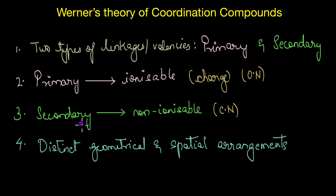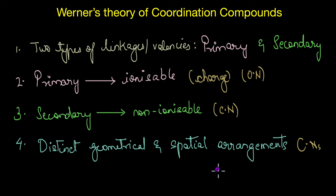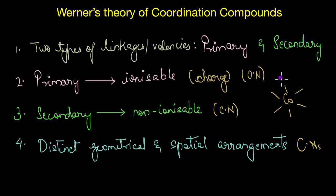The coordination number here is six, corresponding to six ammonia ligands. The third postulate states that groups bound to the central metal atom through secondary linkages have a distinct geometrical and spatial arrangement corresponding to different coordination numbers — these spatial arrangements are called coordination polyhedra. For example, when cobalt is bonded to six ammonia molecules, it has a distinct octahedral geometry.